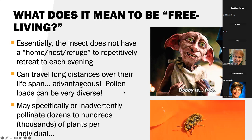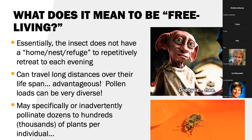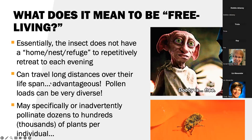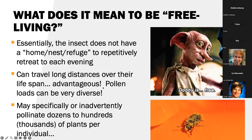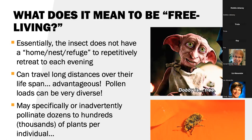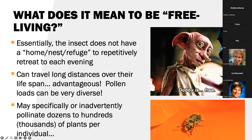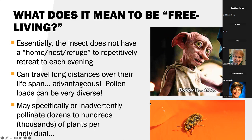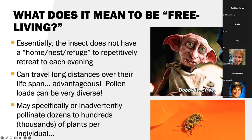What does it mean to be free-living? Essentially, that beetle does not have a home, a nest, or refuge site that it repetitively retreats to each evening. They can travel long distances over their lifespan — that is super advantageous and very key here. And then the pollen load on that beetle — in the hairs, under the elytra, in the mouthparts — can be extremely diverse. They may specifically or inadvertently pollinate dozens to hundreds, even thousands of plants per individual. I love this picture of a beetle that is absolutely covered in pollen — so covered you can't even tell what it is.